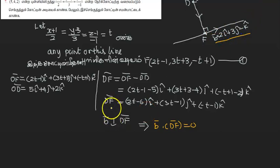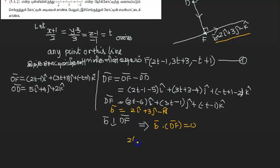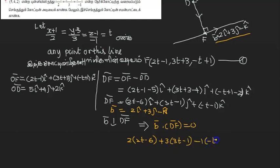Now, this example is 2i plus 3j minus 2i. Minus 1 into minus t minus 1 equal to 0.